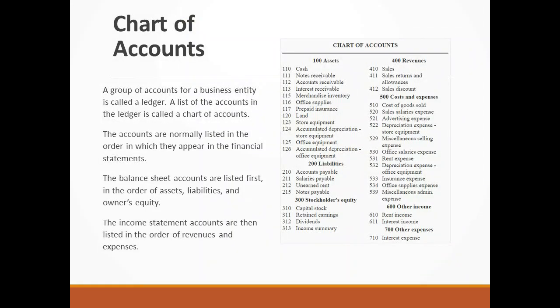A group of accounts for a business entity is called a ledger. A list of the accounts in the ledger is called a chart of accounts. The accounts are normally listed in the order in which they appear in the financial statements. The balance sheet accounts are listed first in the order of assets, liabilities, and owner's equity. The income statement accounts are then listed in the order of revenues and expenses.